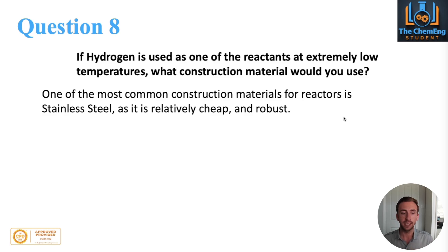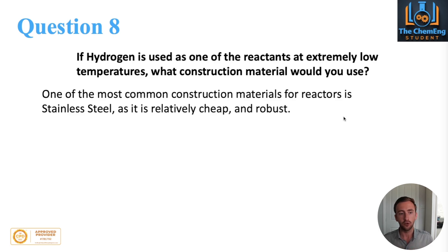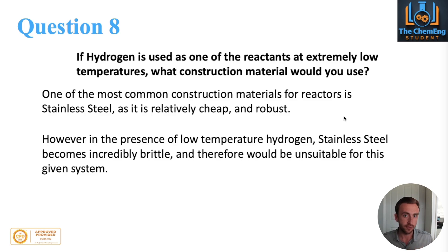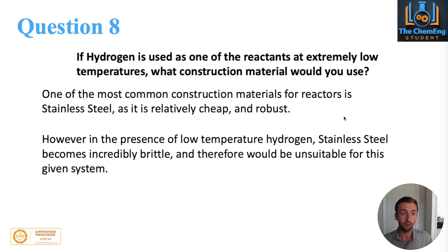One of the most common construction materials for reactors is stainless steel, for a multitude of reasons — it's relatively cheap and quite robust, with a wide range including 316 and high carbon grades. However, the issue with this particular system is that in the presence of extremely low temperatures of hydrogen, it makes the stainless steel become brittle. If we also had significantly high pressures, the likelihood of a rupture is essentially 100%. So stainless steel would be rendered unsuitable for the given system.